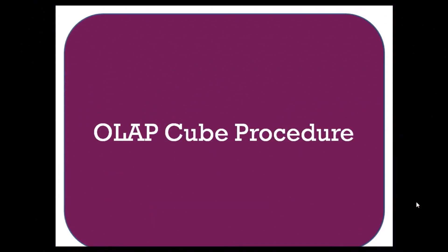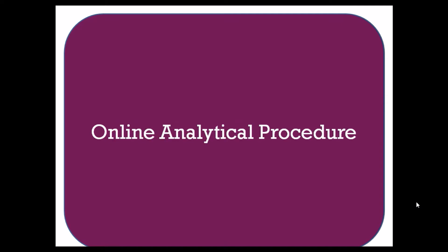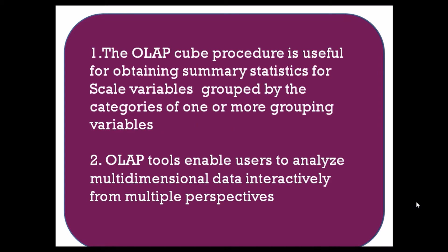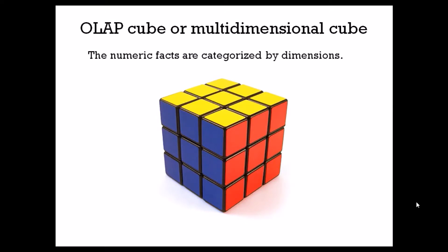Welcome to Easy Statistics. In this session we will be discussing the OLAP cube procedure. OLAP stands for Online Analytical Procedure. The OLAP cube procedure is useful for obtaining summary statistics for scale variables grouped by the categories of one or more grouping variables. OLAP tools enable users to analyze multiple-dimension data interactively from multiple perspectives.